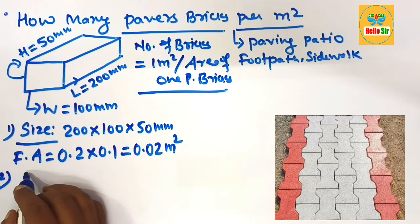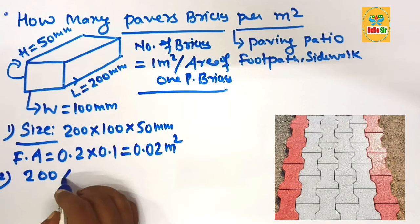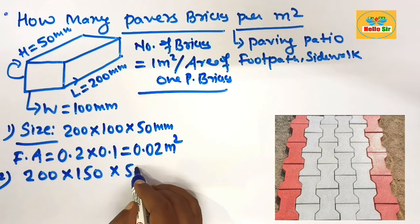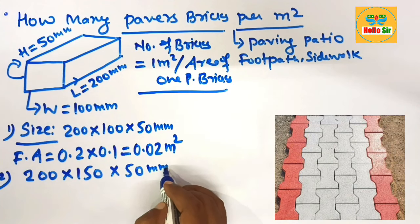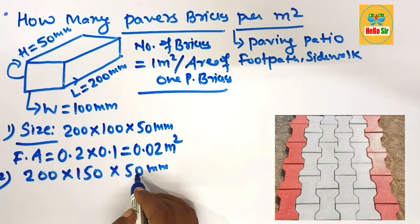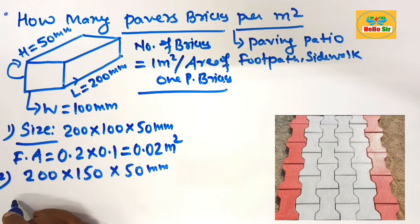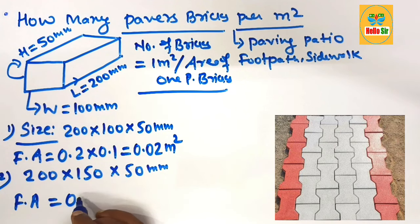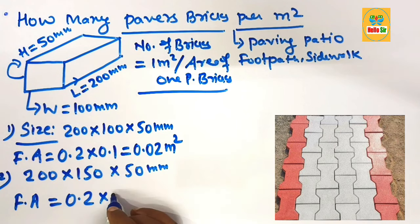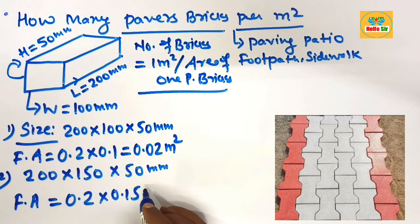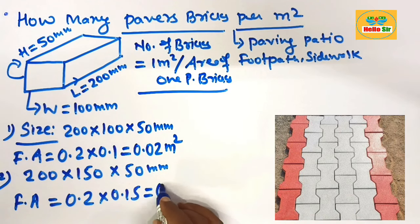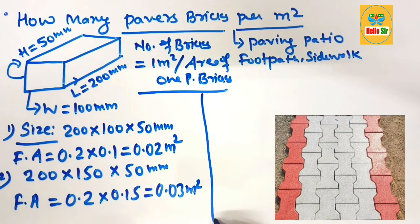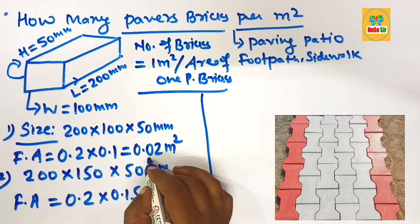Now let's calculate the other size, which is 200 mm by 150 mm. The face area of this paving brick is 0.2 m multiplied by 0.15 m, which gives 0.03 square meters. That is the face area for this second size of paving brick.